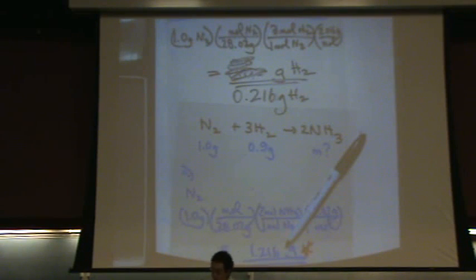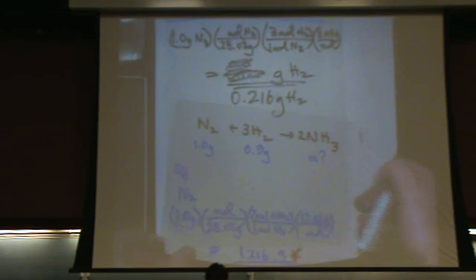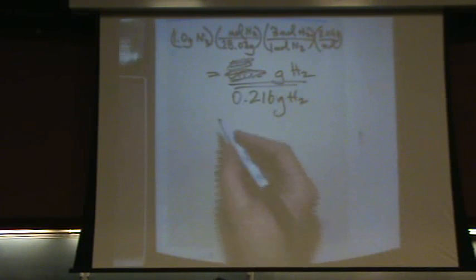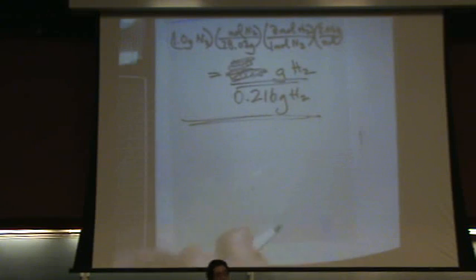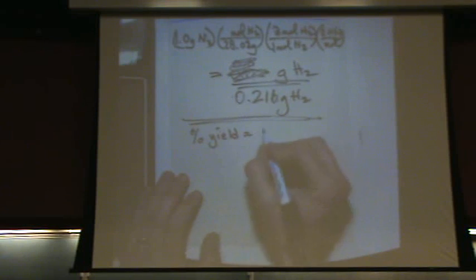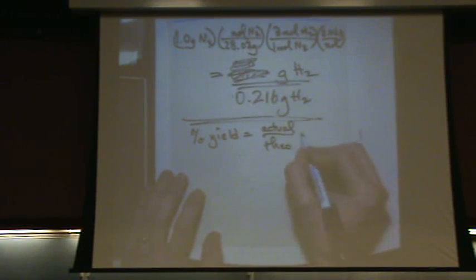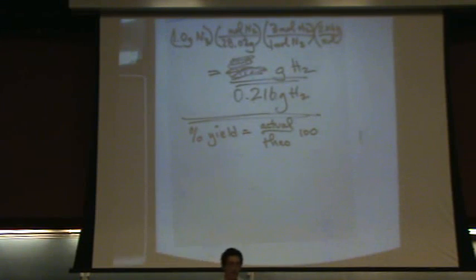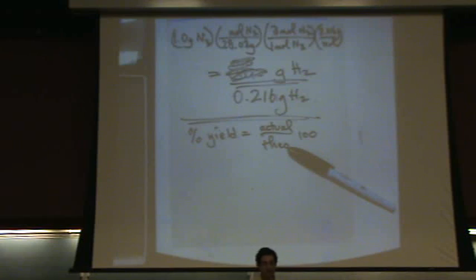Okay, there's one more type of problem that you can be asked in this part. Okay. Is the percent yield. Percent yield which is the actual minus theoretical times 100. Okay, that's the formula you want to use. You'll have to know that formula. We usually don't give it to you. Theoretical is what you calculate. If you are using a calculator that number is the theoretical number.